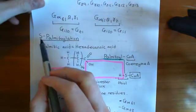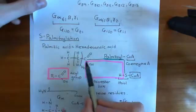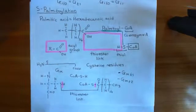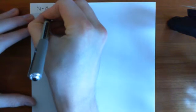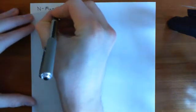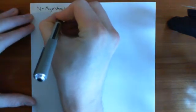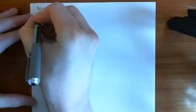Going back to S-palmitoylation briefly — the reason it is called S-palmitoylation is that we have stuck the palmitoyl group onto a sulfur atom that dangles off the protein, hence why it's called S-palmitoylation: we've added it onto an S atom. N-myristoylation is so called because we're going to add the myristoyl group onto a nitrogen atom.